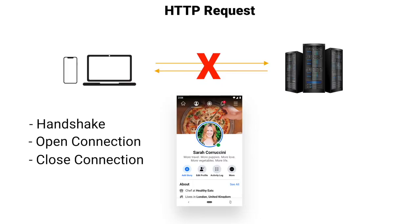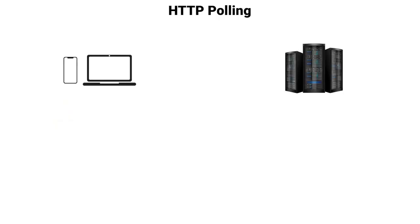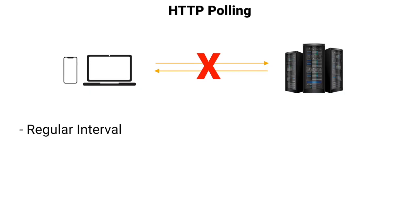Now we need to discuss HTTP long polling, but before that we also need to know about HTTP polling, which is actually different from HTTP long polling. In HTTP polling, the client keeps making requests to the server at a regular interval — for example, one second or two seconds. The server does its work and sends the response back, but the response can be empty because the server might not have any useful updates. So most requests might get an empty response, and only a few requests get useful updates. The problem is that we are making so many unnecessary network calls.